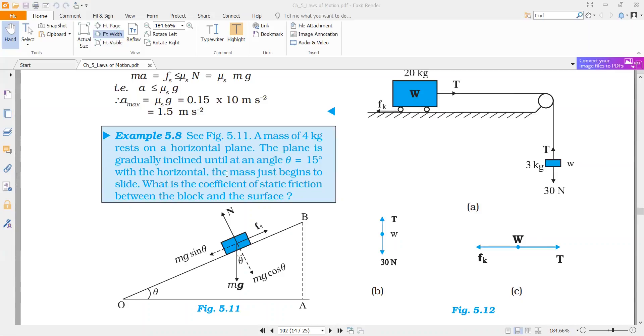So tan 45 we know is 1, and tan 30 is 1 by root 3, upon 1 plus 1 into 1 by root 3.